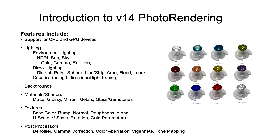A variety of new materials and shaders are available, including matte, glossy, mirror, and a whole new library of metals, glass, and gemstones. There continues to be a large texture library that you can drag and drop onto your models, including image maps for your base or diffuse color, bump, normal, roughness, or alpha mask. Textures include the ability to adjust UV scaling, rotation, or gain parameters.